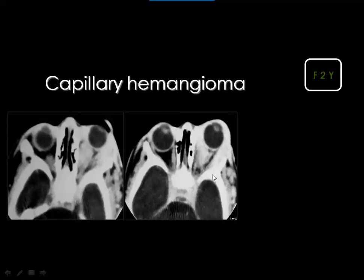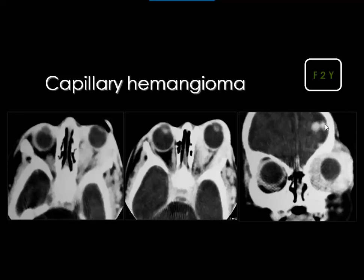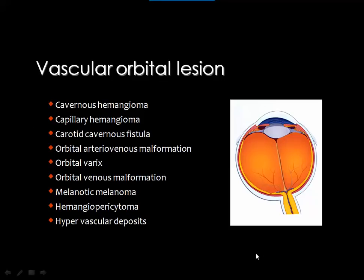An extensive strongly enhancing mass displacing the globe anteriorly in a child, with multiple dilated tortuous vessels visible outside the orbit and enhancing intracranial vessels on coronal imaging, indicates capillary hemangioma. The differential diagnosis of vascular lesions inside the orbit includes: cavernous hemangioma (well-defined, homogenously enhancing, in adults); capillary hemangioma (ill-defined, strongly enhancing, in children); carotid-cavernous fistula; orbital arteriovenous malformation; orbital varices; orbital venous malformation; melanotic melanoma; hemangiopericytoma; and hypervascular metastatic deposits.